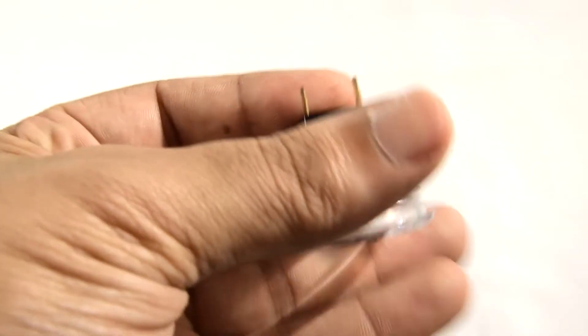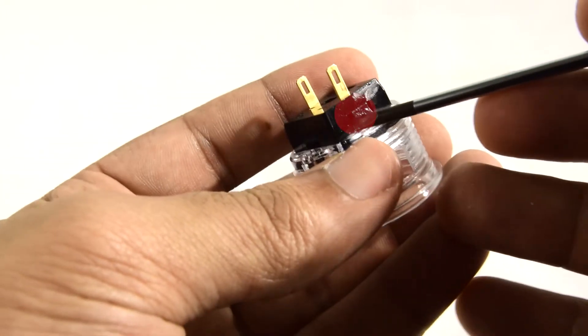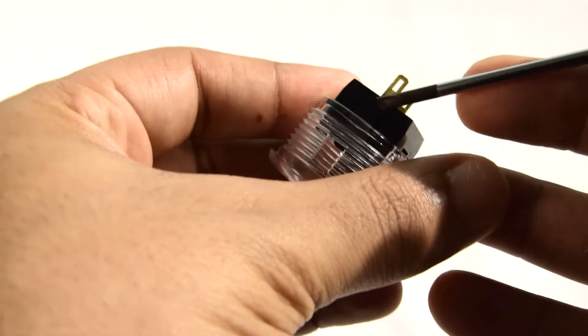Flip the push button barrel over to get a good view of its back end, the switch base. The switch base has two locking tabs that need to be depressed while pushing the base through to the top of the push button barrel.